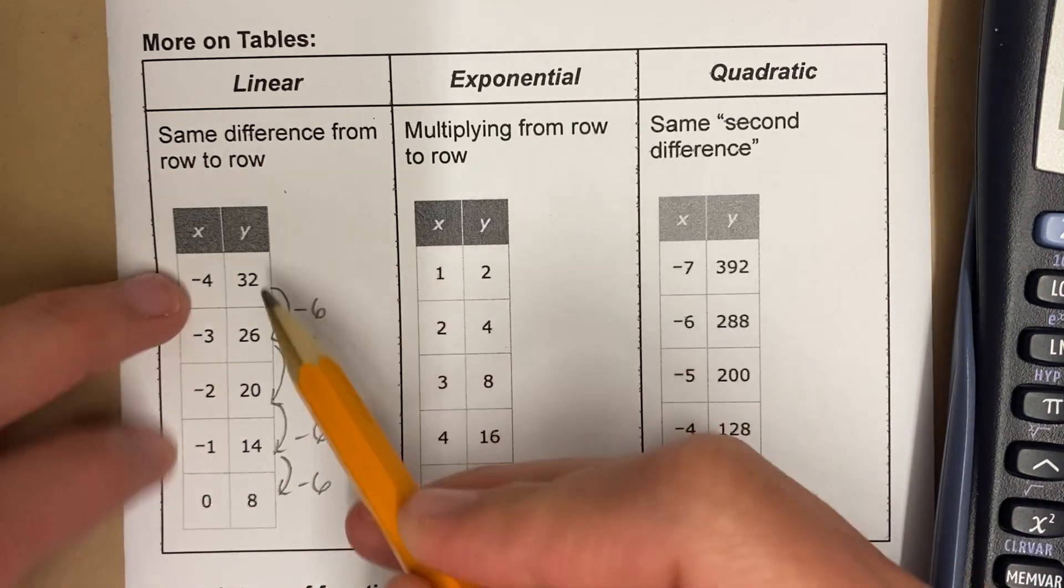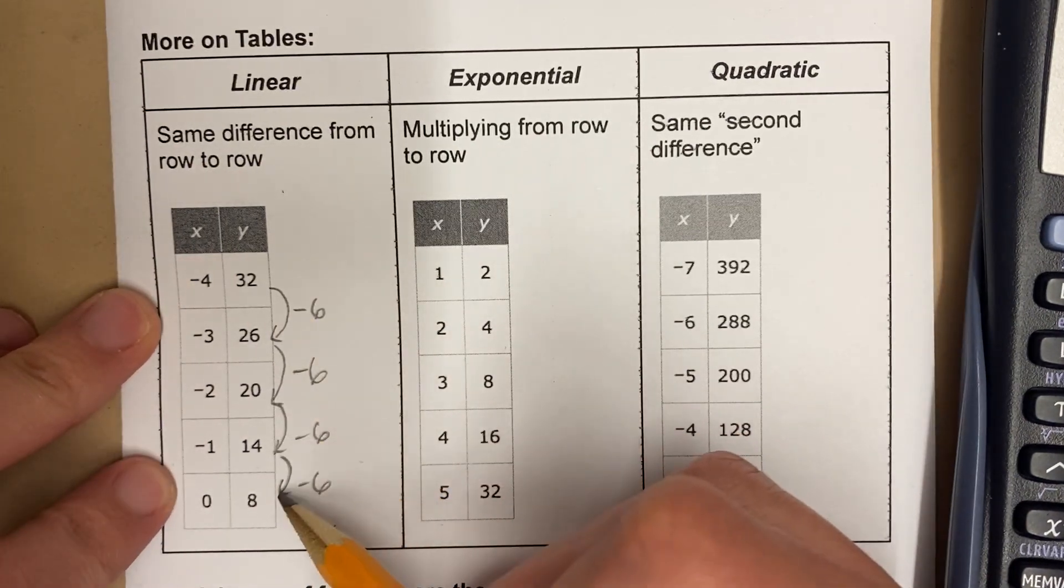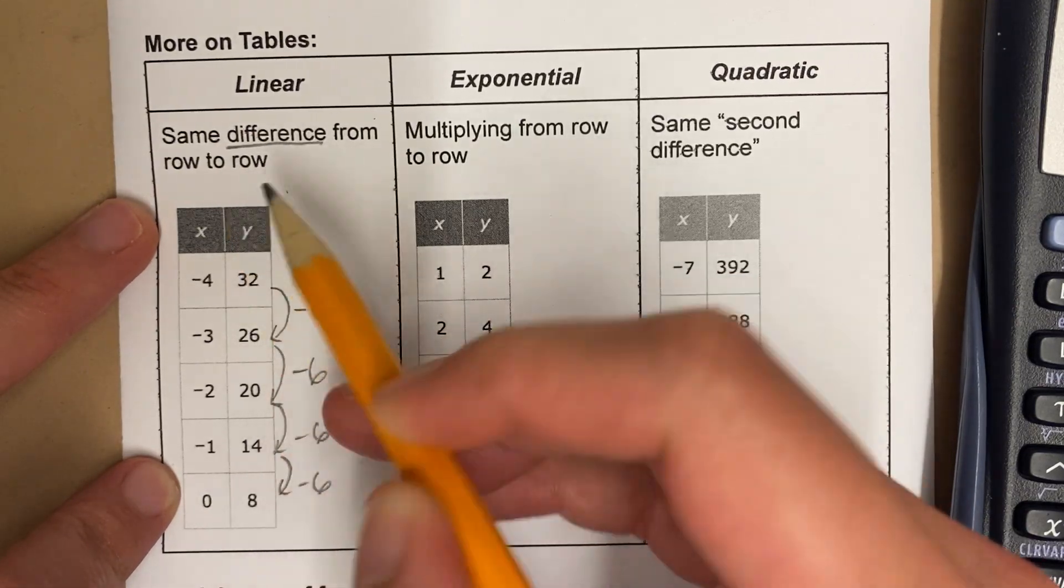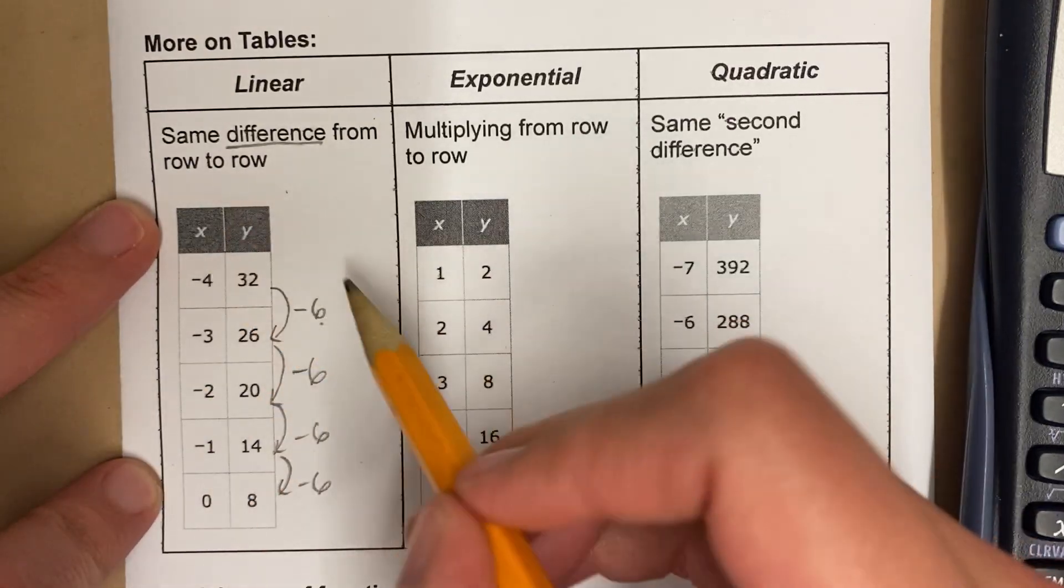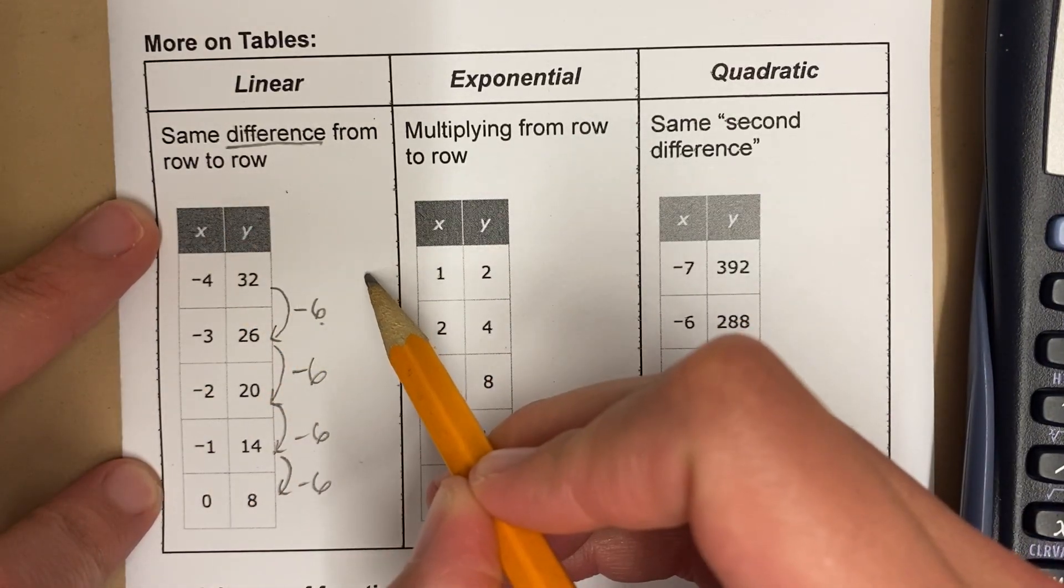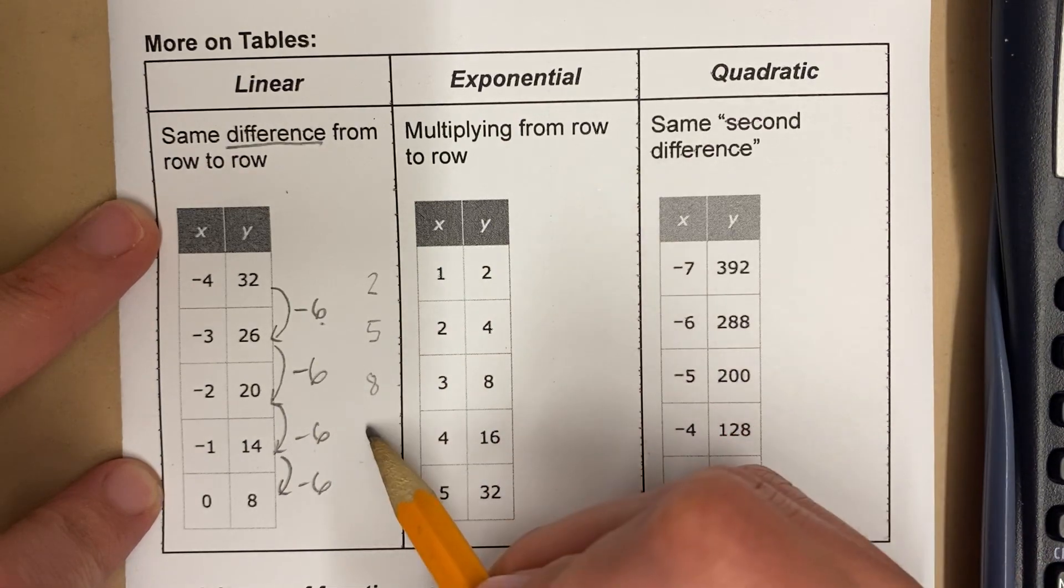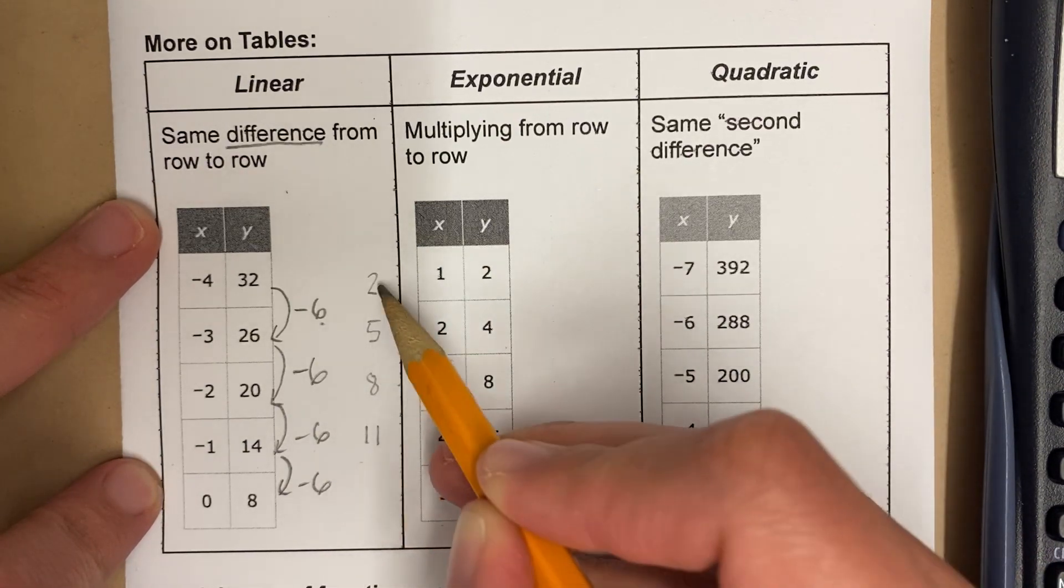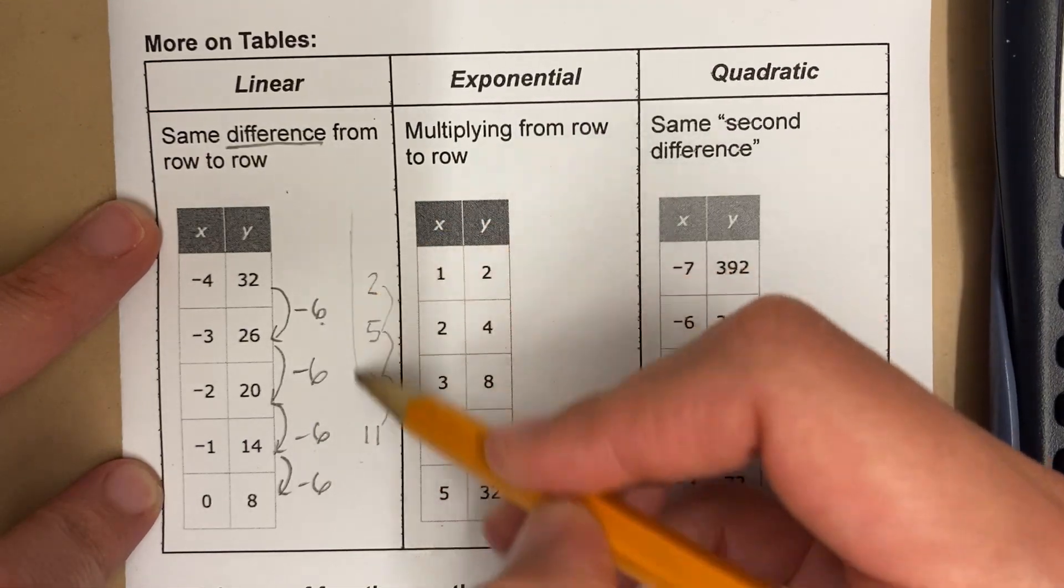We can see 32 minus 6, this is minus 6, minus 6, minus 6. So that's the same difference from row to row. In this case the numbers are going down, so it's negative. Sometimes the numbers are going up. For example, this would be a linear function. Let's say I had 2, 5, 8, 11, that would be plus 3, plus 3, plus 3.